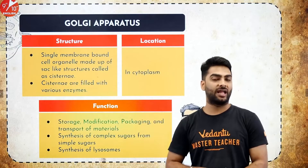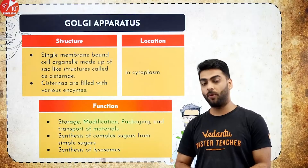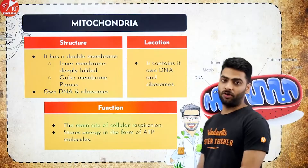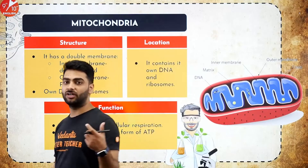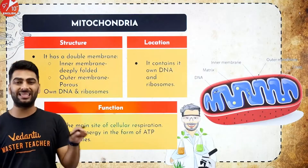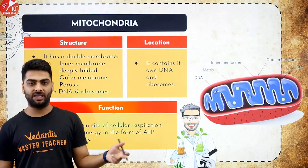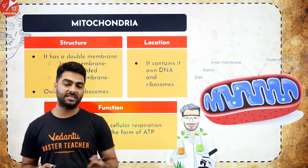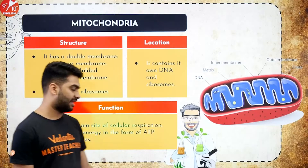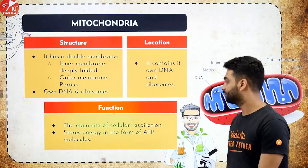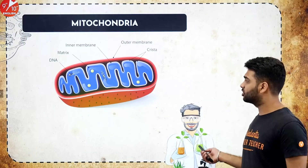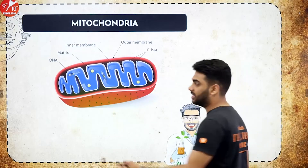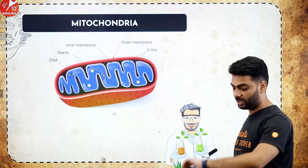Lysosomes are the suicide bags of the cell. They have hydrolytic enzymes which destroy any foreign body that enters the cell. Mitochondria is the powerhouse of the cell — it converts ADP + Pi to ATP and ATP back to ADP + Pi. It is a double membrane structure filled with a liquid called matrix. Mitochondria has its own DNA, making it a very important organelle.